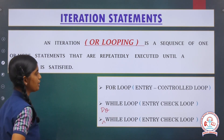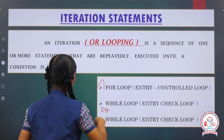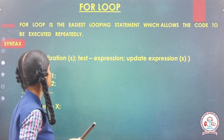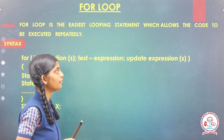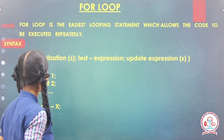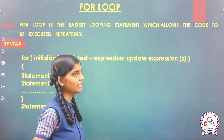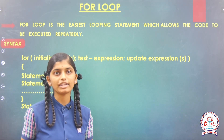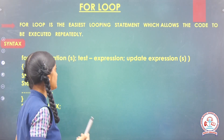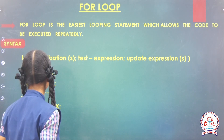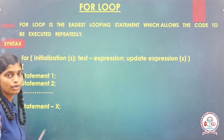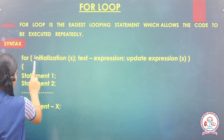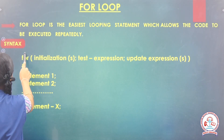Today, we are going to see the topic of for loop. So, let's see what is meant by for loop. For loop is the easiest looping statement which allows the code to be executed repeatedly. If you are giving a condition that wants to be executed repeatedly, we can use this for loop. So, let me see the syntax of for loop.